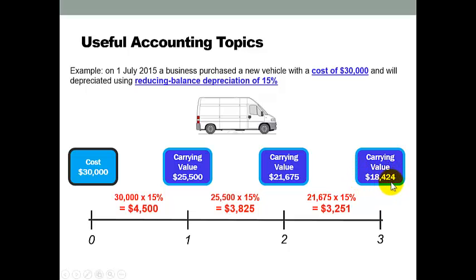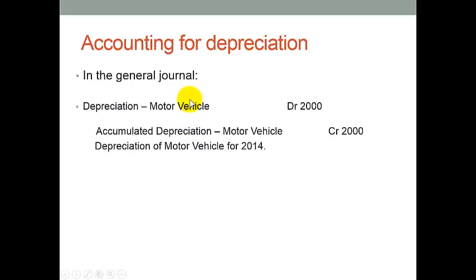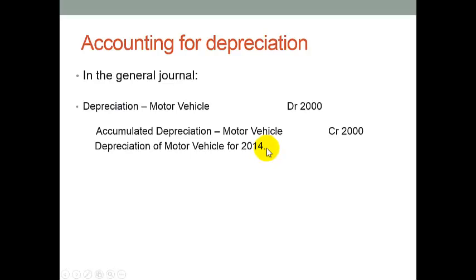For accounting in the general journal, we have an expense called depreciation — and if it's a different type of asset we must indicate what sort of depreciation it is. Here it's a motor vehicle: debit $2,000, and we credit the account called accumulated depreciation motor vehicle, credit $2,000. We also have to give our narration at the bottom and, if necessary, the calculation.